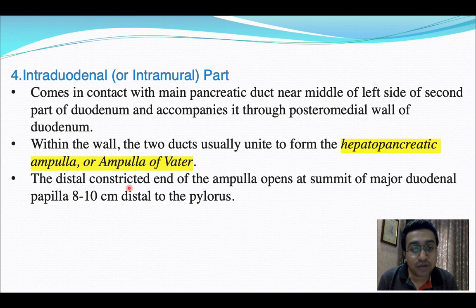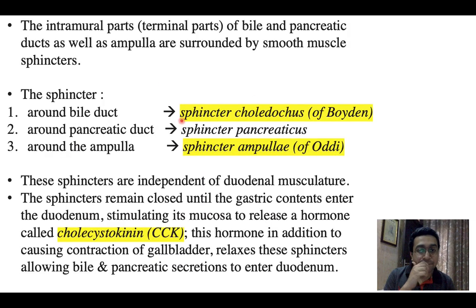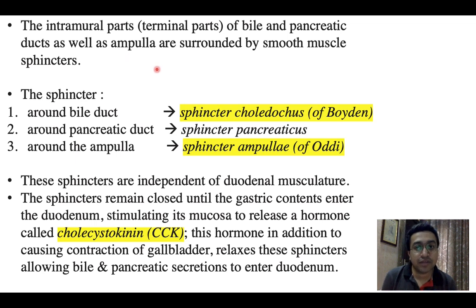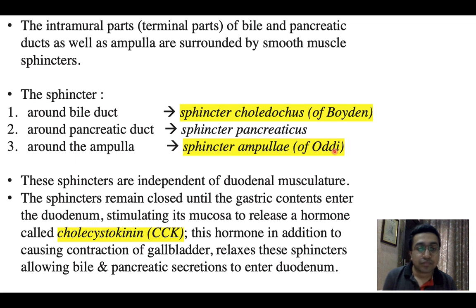The distal constricted end of the ampulla opens at the summit of the major duodenal papilla, 8 to 10 centimeters distal to the pylorus. The intramural terminal parts of the bile and pancreatic ducts as well as the ampulla are surrounded by smooth muscle sphincters. There are three sphincters primarily: around the bile duct the sphincter choledochus or sphincter of Boyden, around the pancreatic duct the sphincter pancreaticus, and around the ampulla the sphincter ampullae or sphincter of Oddi.